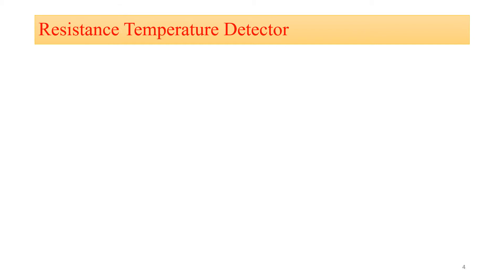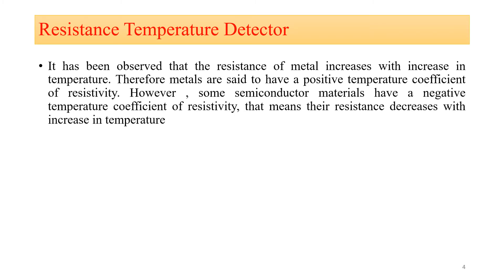Let's start with the first temperature sensor: the resistance temperature detector, also called RTD. It has been observed that the resistance of a metal increases with increase in temperature. Therefore, metals are said to have a positive temperature coefficient of resistivity — meaning if the temperature of the metal goes on increasing, the resistance of that metal will increase. This is what positive temperature coefficient of resistivity means.